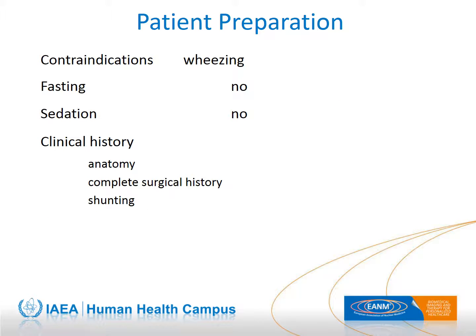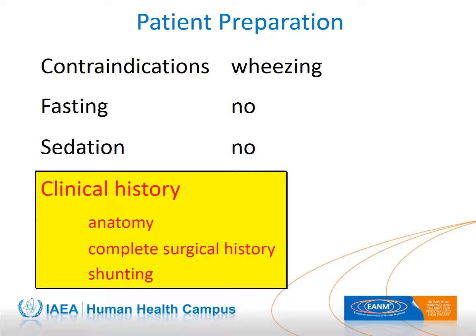Wheezing is a contraindication because hypoventilation in lung parenchyma can cause reversible hypoperfusion not related to the congenital heart disease. Such defects have a typical patchy distribution and disappear after administration of bronchodilators. Beta-agonists administered 20 to 40 minutes before the injection can prevent this problem. Sedation is unnecessary and is often contraindicated. Detailed clinical history is mandatory before injection. The number of particles depends primarily on the anatomofunctional situation, related to the type of malformation and surgical treatment.